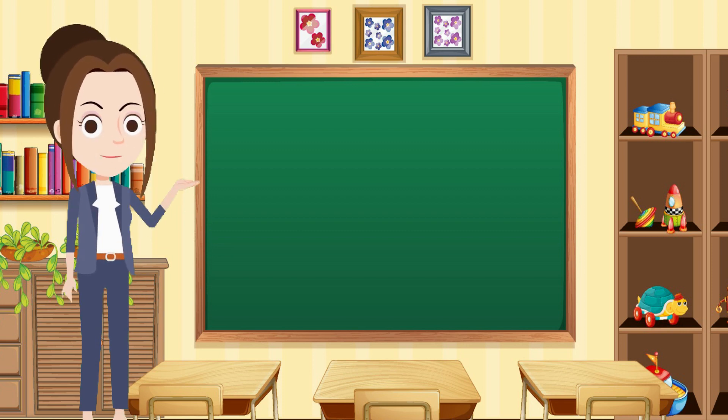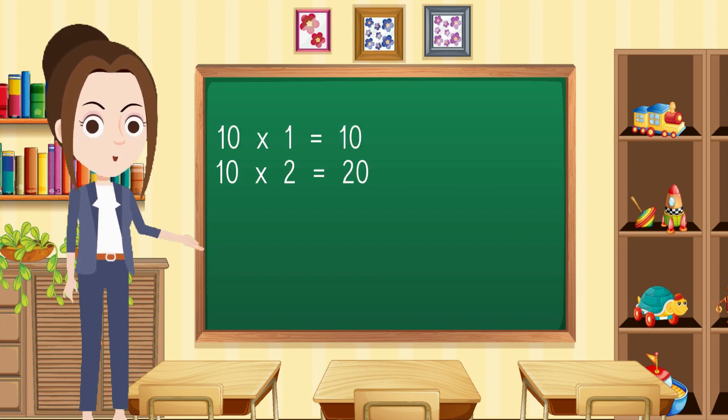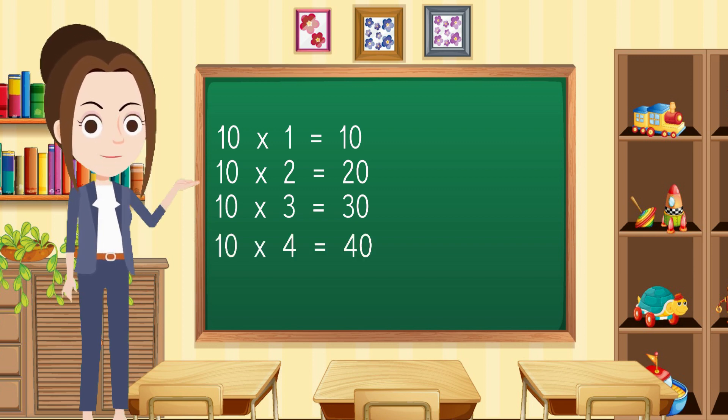repeat again. 10 ones are 10. 10 twos are 20. 10 twos are 20. 10 threes are 30. 10 threes are 30. 10 fours are 40. 10 fours are 40. 10 fives are 50. 10 fives are 50.